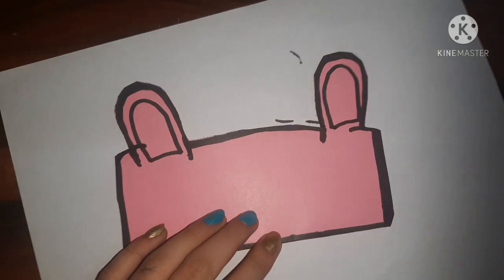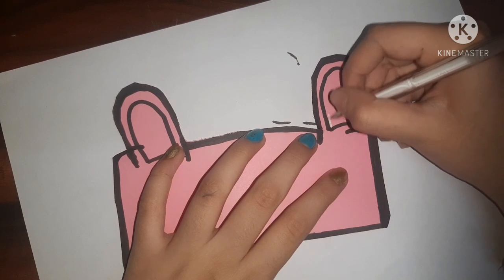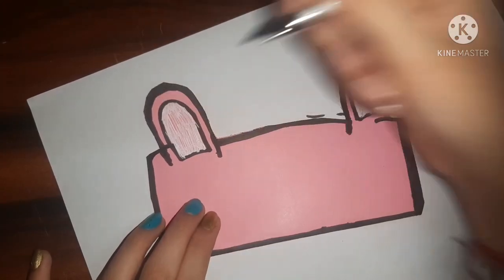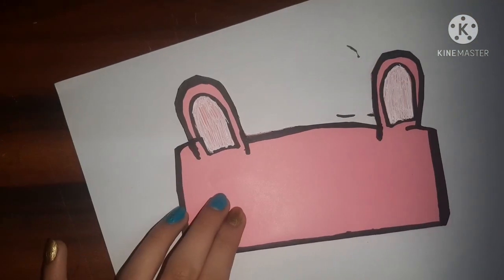After giving the outline I even made two cute ears and now I'm just going to fill some white color with the help of white pen in the ears. If you don't have white pen then you can use whitener, I mean correction pen or a white sheet for the ears.